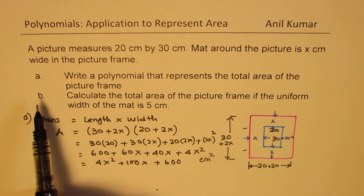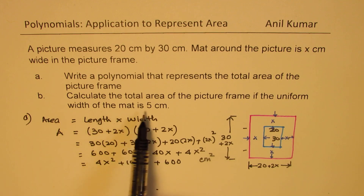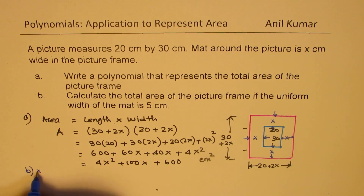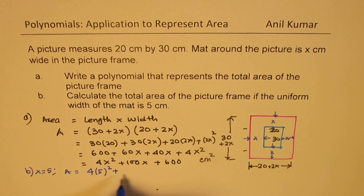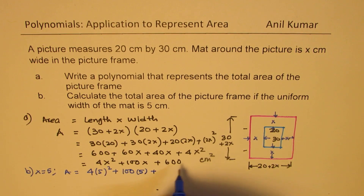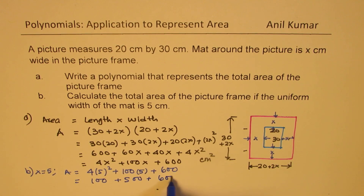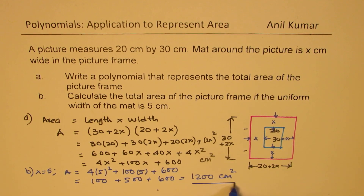So that is our part A. Part B: calculate the total area of the picture frame with the width as 5 centimeters. We substitute x = 5 into the polynomial. Area = 4(5²) + 100(5) + 600. So 5 squared is 25, times 4 is 100; plus 500; plus 600 — which gives us 1200 square centimeters as our answer.